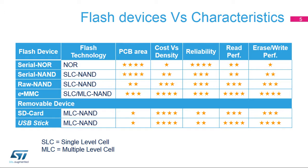Raw NAND technology has a parallel interface which is not good for PCB areas, but offers a good trade-off between cost and performance. Most raw NAND memories do not have embedded error correction and so need additional hardware and file system management for bad block management and wear leveling.